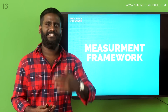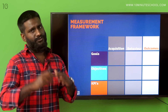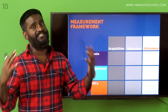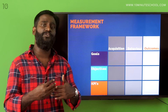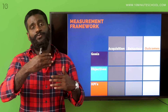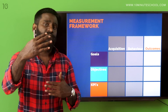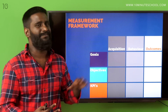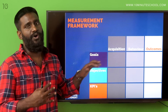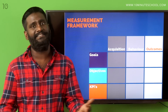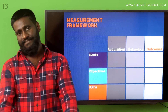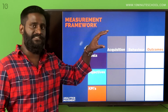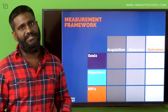Can we organize them? That's what a measurement framework is. It's very simple — you have your goals. Goals are what you want to achieve as a business. For example, I want to increase my revenue by 20% by the end of next year. That's a business goal at a very high level. Or you would say, I want to decrease my cost by 60% by next year. That's the business goal — what do you want to achieve as a business.